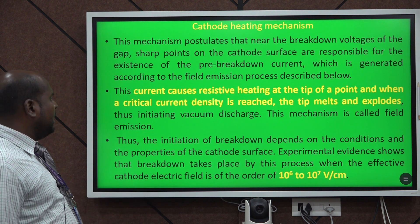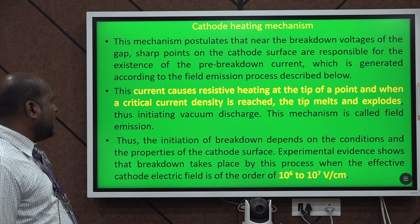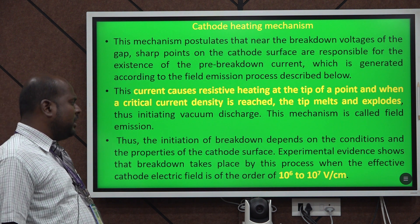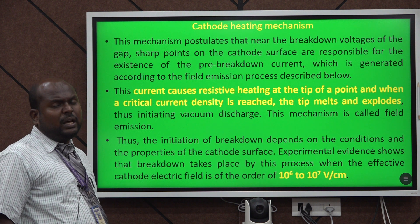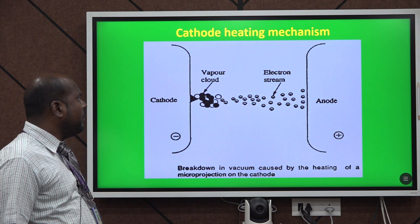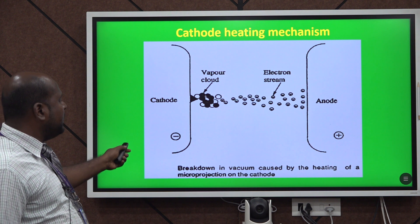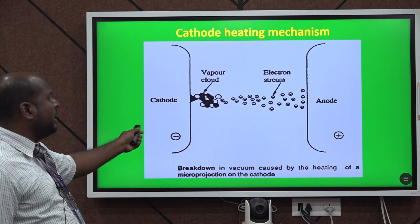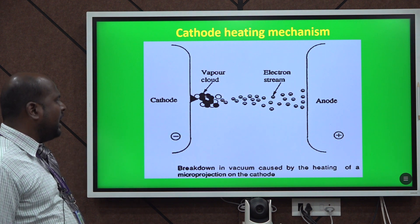Then the cathode mechanism may occur. The cathode mechanism is the main reason for the next breakdown. Here the cathode has sharp points, and thereby breakdown may occur.